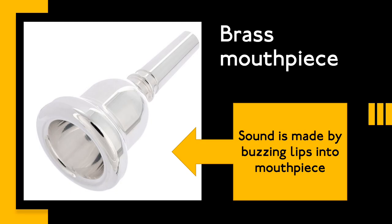What makes a brass instrument different from a woodwind instrument is the way that the sound is produced — you don't just blow into it, you have to buzz your lips into the mouthpiece. The different pitches that you can hear are made by tightening or loosening the buzz of your lips.